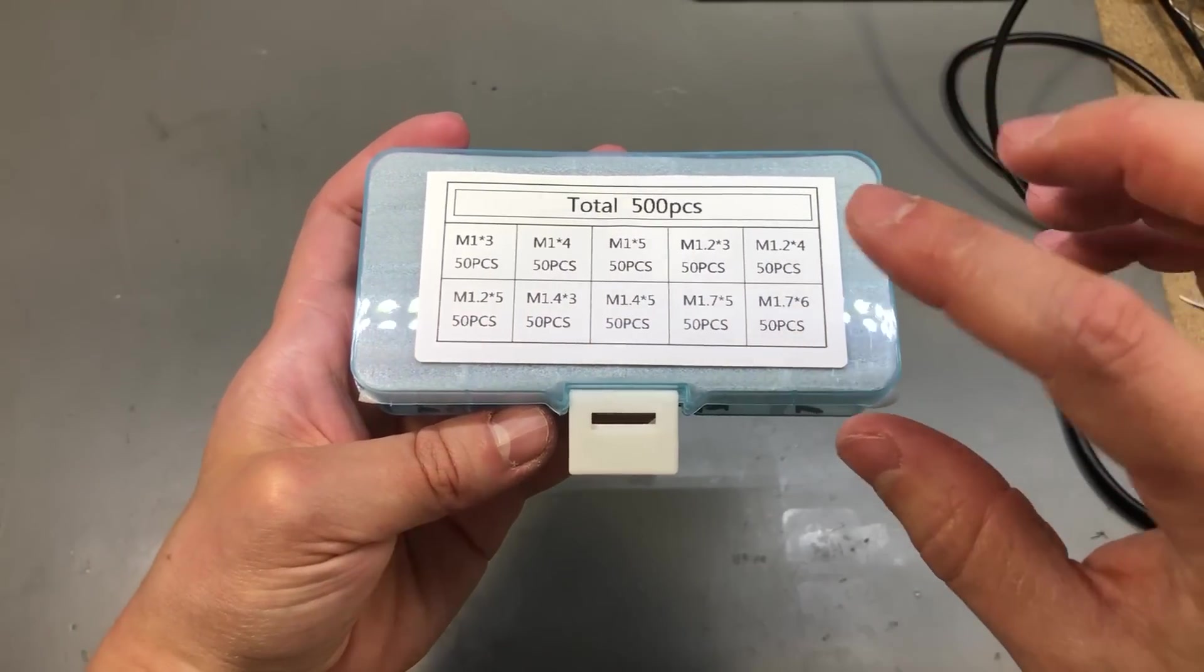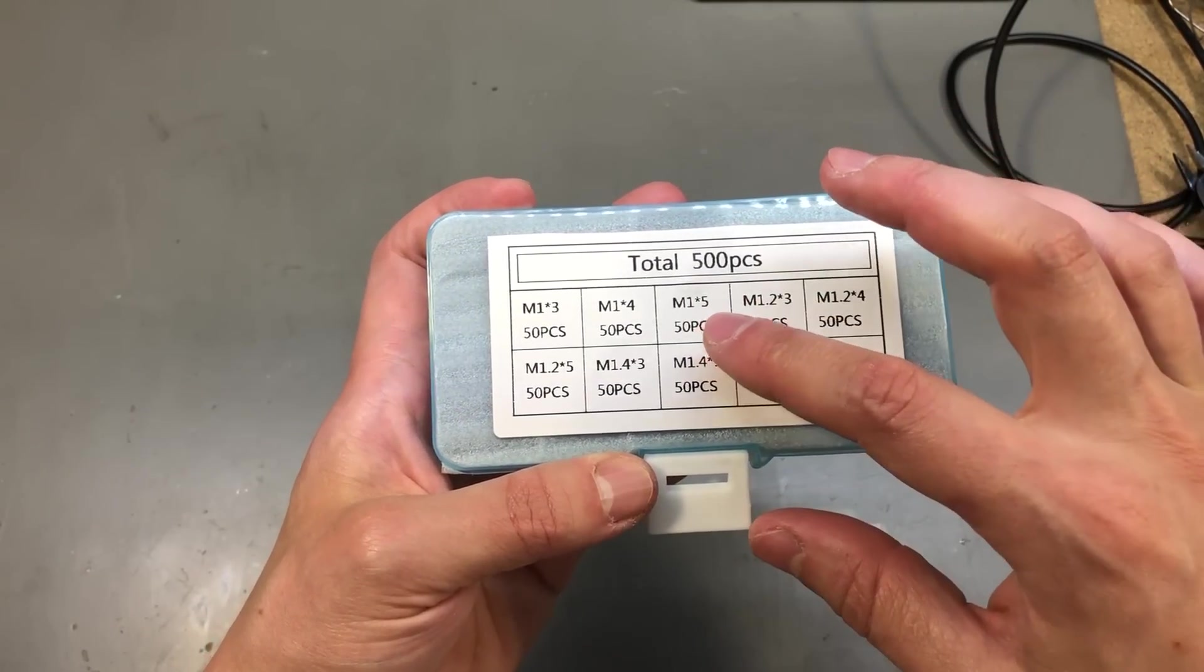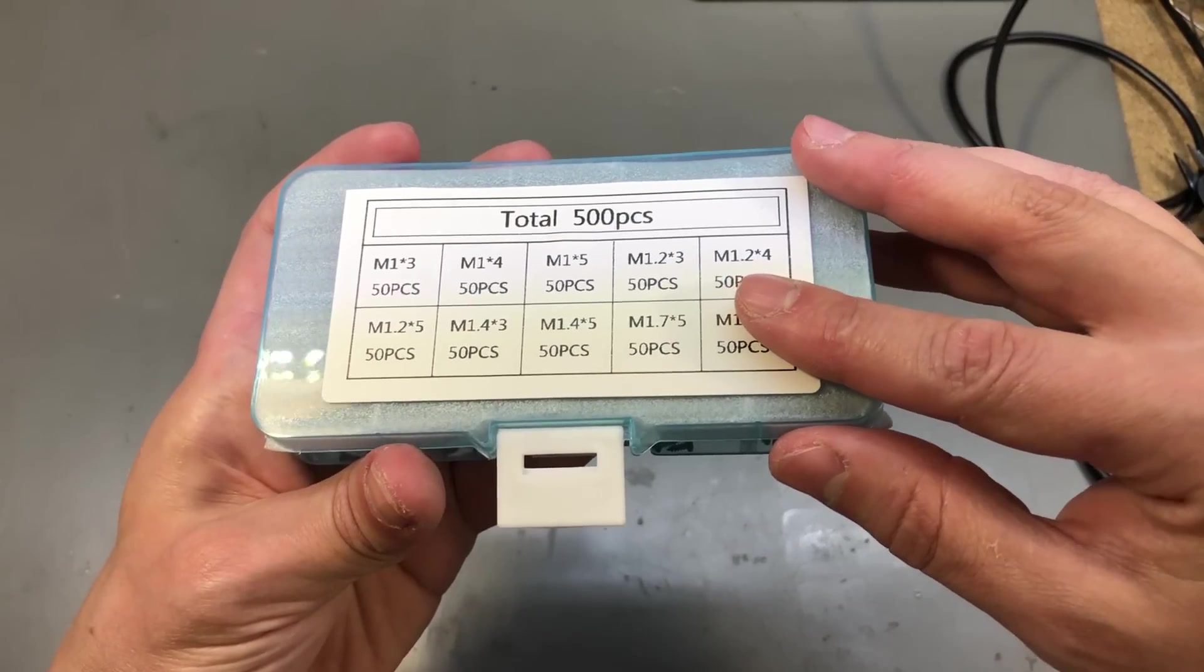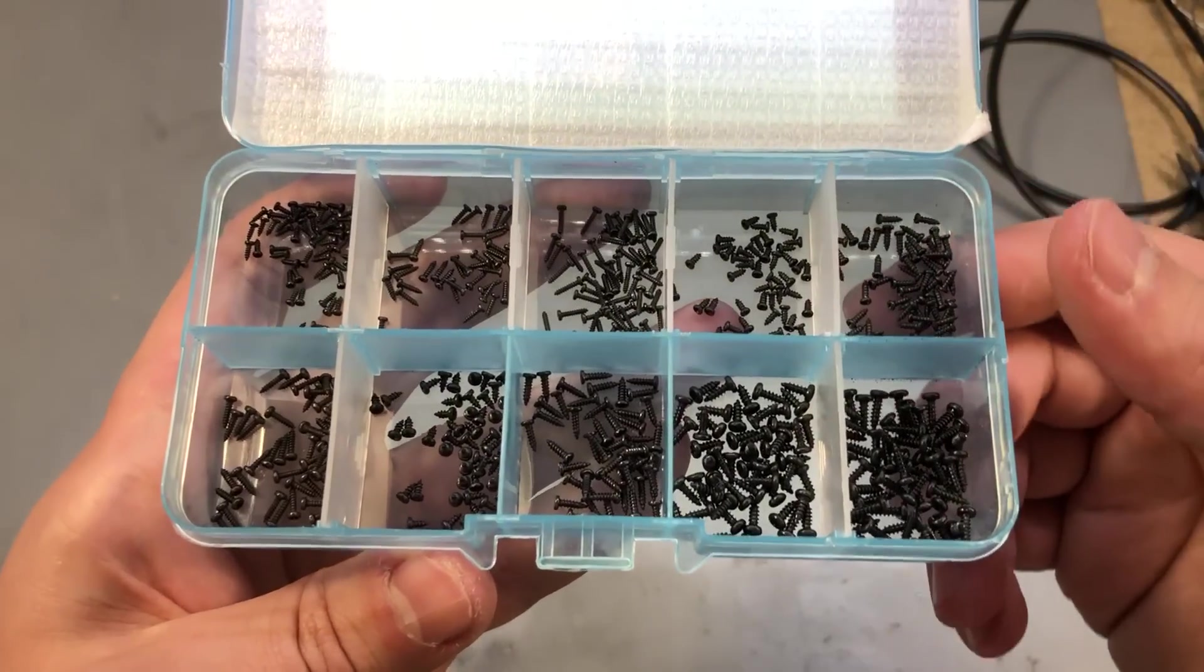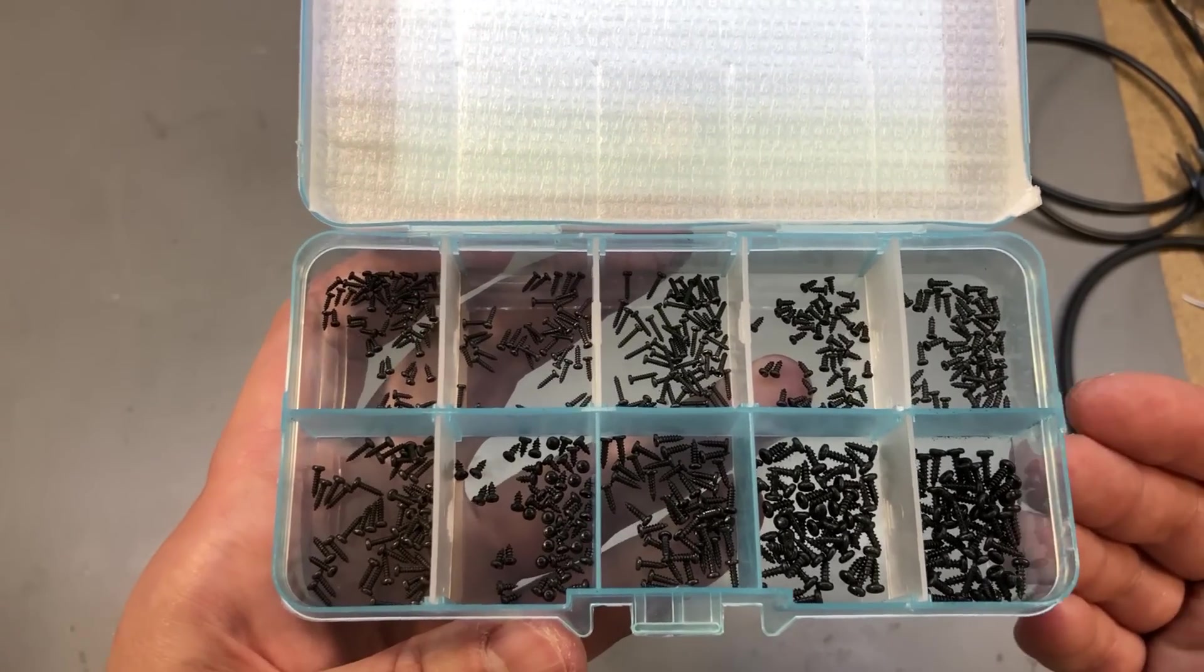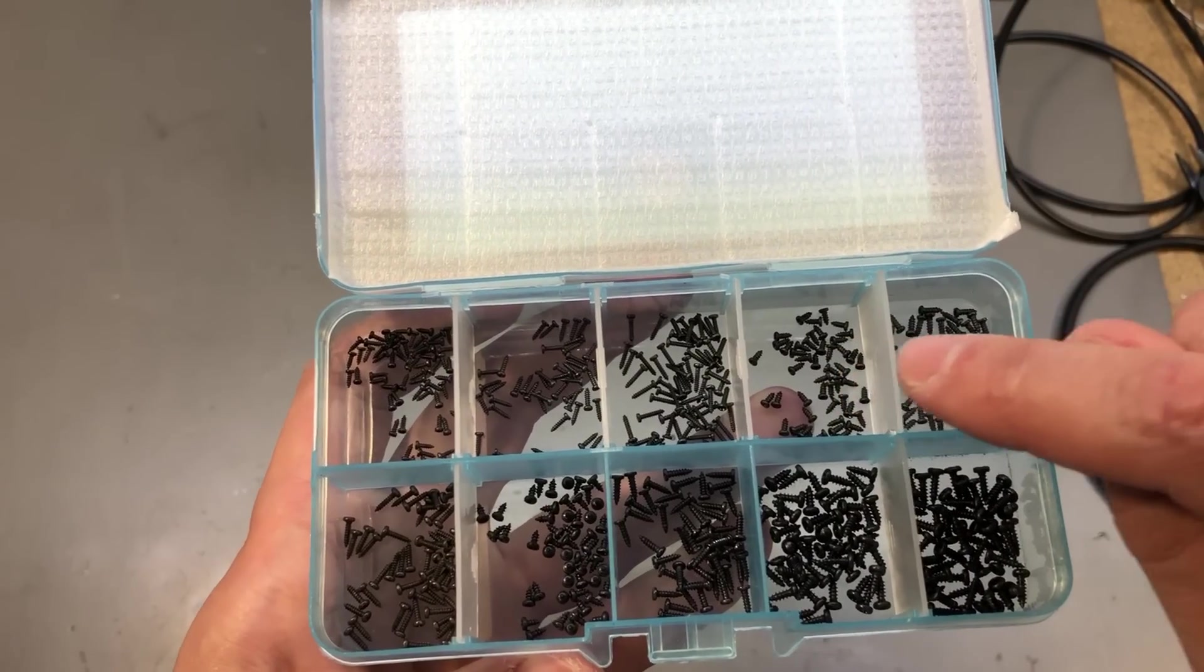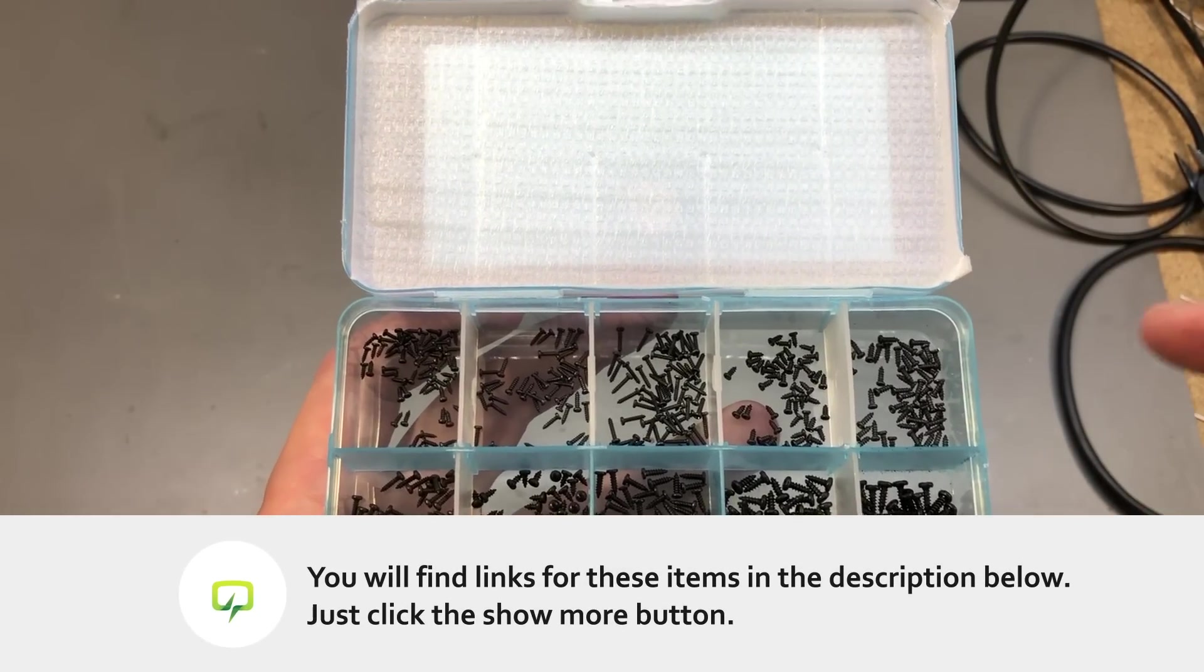And the last item in today's video is this assortment of threaded screws, mainly very small sizes ranging from M1 up to M1.7 with lengths between 3 and 6 millimeters. These should come in handy when repairing various gadgets which might use such small screws or for attaching small stuff inside 3D printed enclosures. I'm glad to see that the seller is taking care and is putting this piece of foam in here to prevent the screws from mixing with each other compartment.